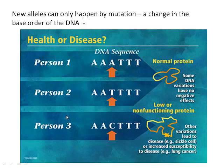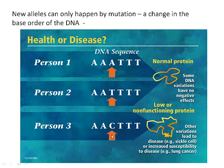New alleles can only happen by mutation — a change in the base order of the DNA. Here's a person who has a perfectly good copy in their DNA to make a protein. And here's a person who has had a change in the base order, and as a result the protein they make either doesn't work or doesn't work very well. In person three there's a slightly different change and their version of the protein can actually lead to disease.